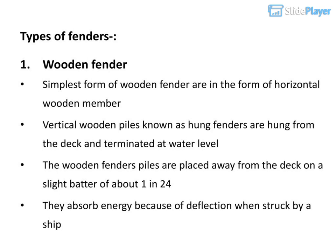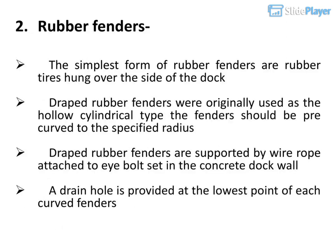Types of fenders — Wooden fender: The simplest form consists of horizontal wooden members. Vertical wooden piles known as hung fenders are hung from the deck and terminated at water level. Wooden fender piles are placed away from the deck on a slight batter of about 1 in 24 and absorb energy due to deflection when struck by a ship. Rubber fenders: The simplest form is rubber tires hung over the side of the dock. Draped rubber fenders were originally used as the hollow cylindrical type, pre-curved to a specified radius, supported by wire rope attached to eye bolts set in the concrete dock wall, with a drain hole at the lowest point.